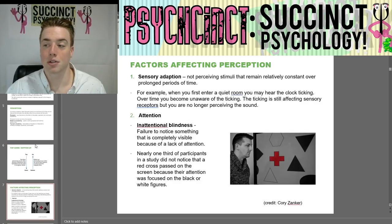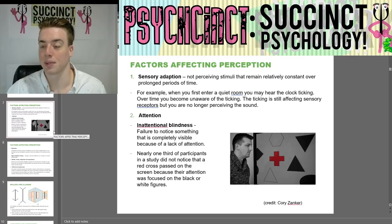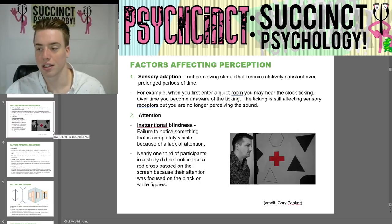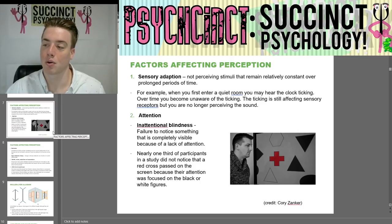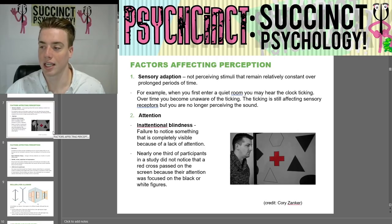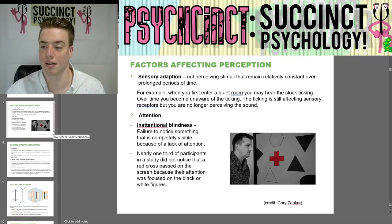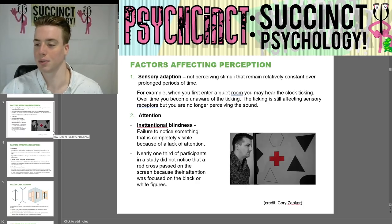Factors affecting perception: first we have sensory adaptation — not perceiving stimuli that remain relatively consistent over prolonged periods of time. For example, when you first enter a quiet room, you may hear the clock ticking. Over time, you become unaware of the ticking. The ticking is still affecting your sensory receptors, but you are no longer perceiving the sound because you've gotten used to it.